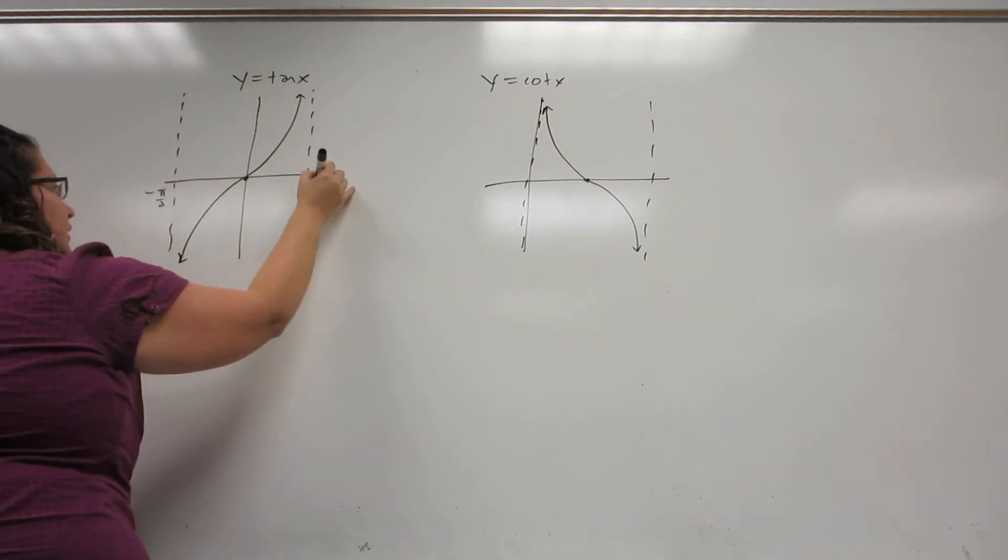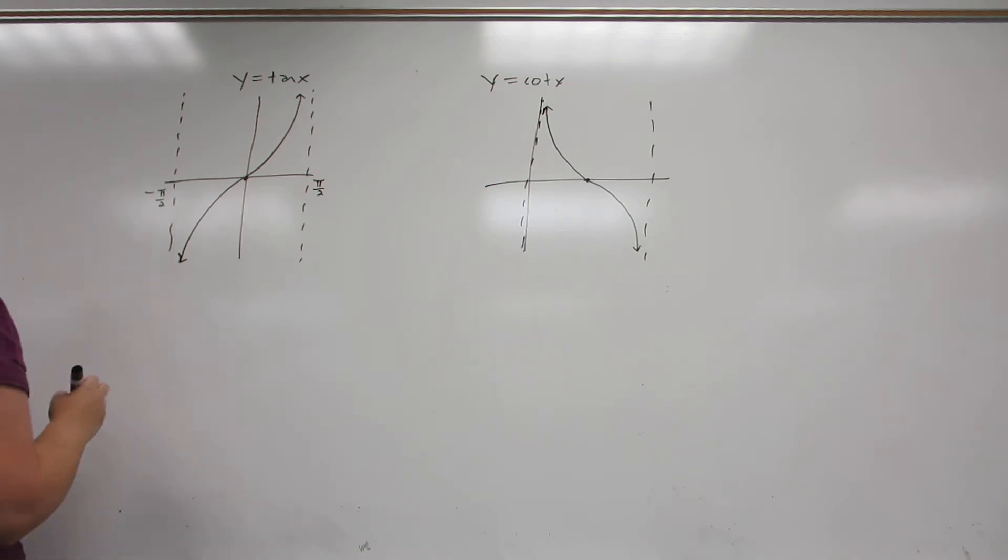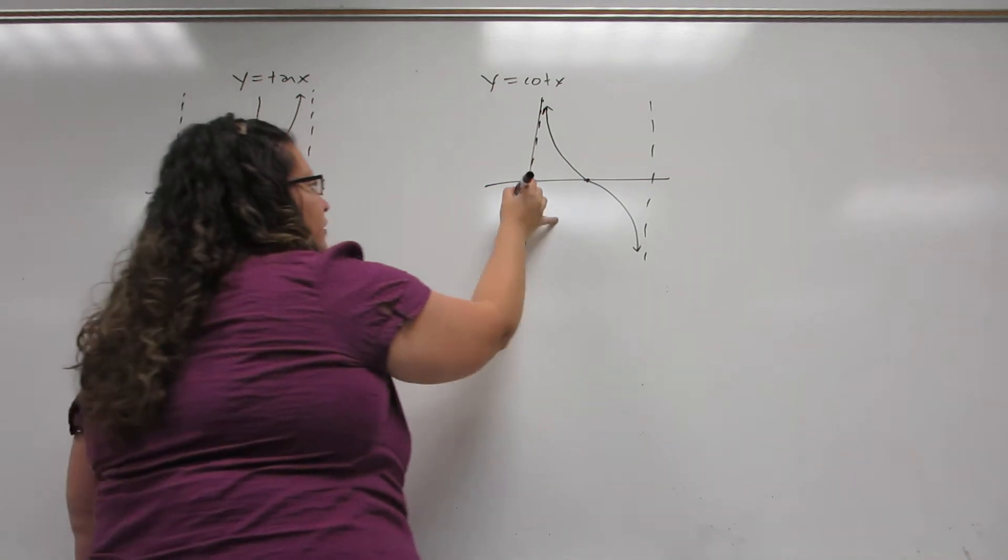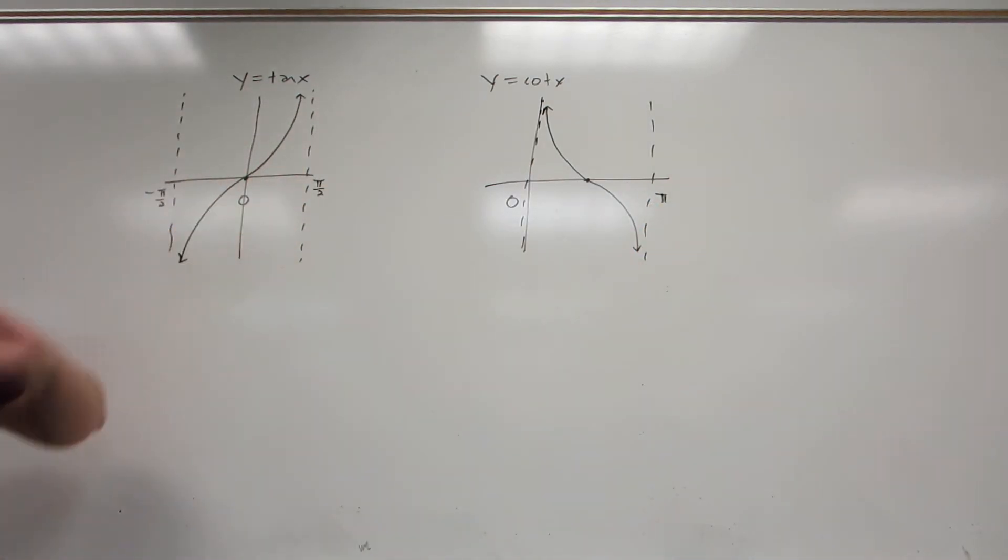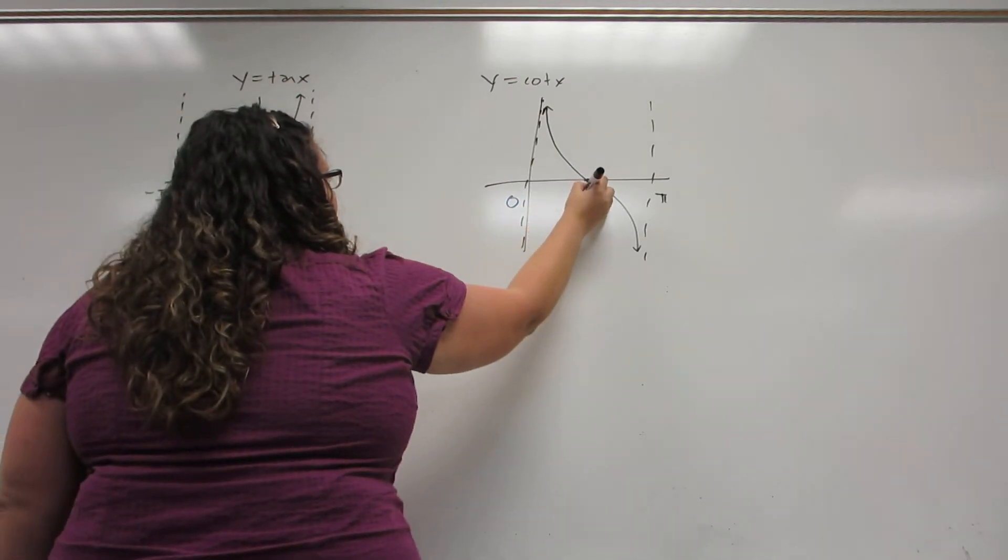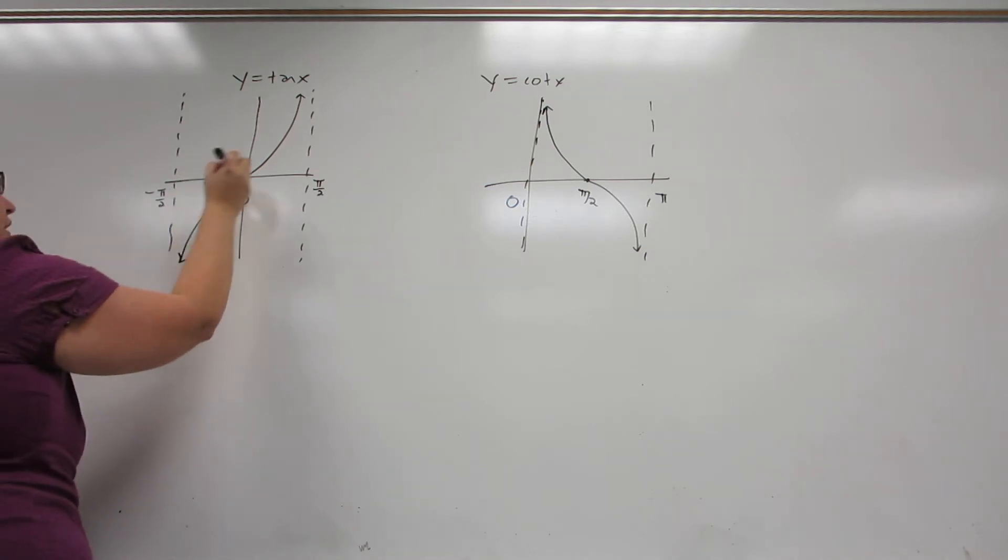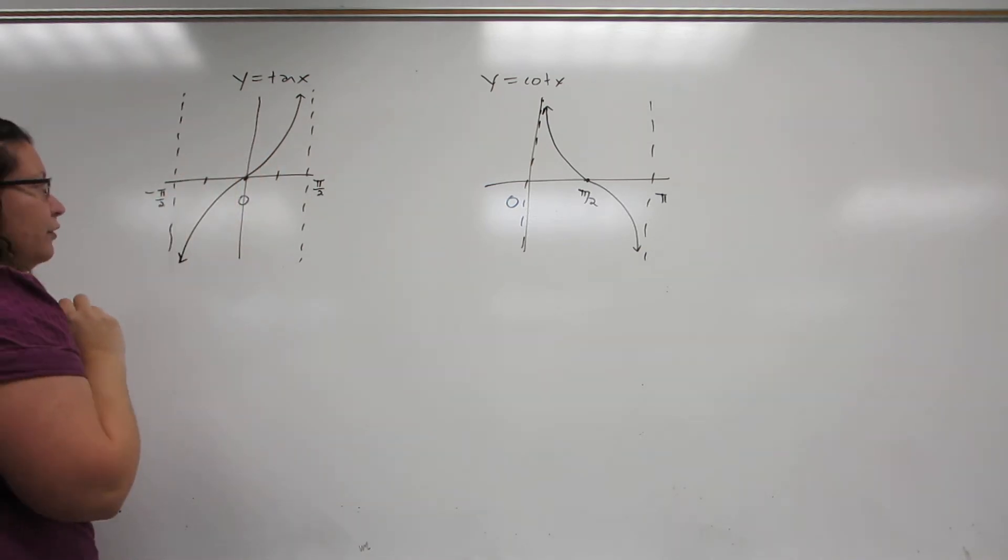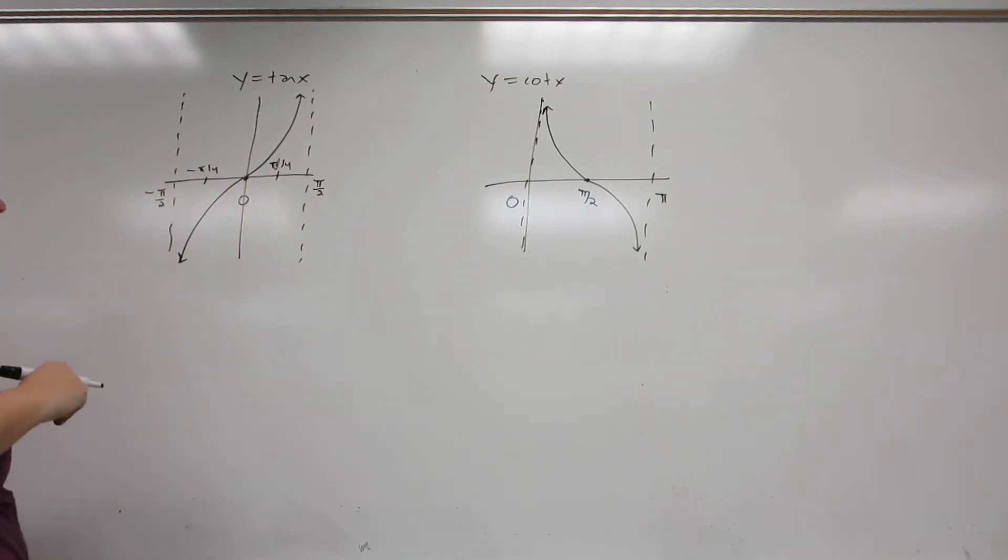First of all, instead of a first and fifth key point, it's actually the coordinates of the asymptote. So here it's zero and pi, and here it's minus pi over two and pi over two. Second of all, the quarter points, as I like to call them, which are the second and fourth key point, have a very different function than in the other trigonometric functions.